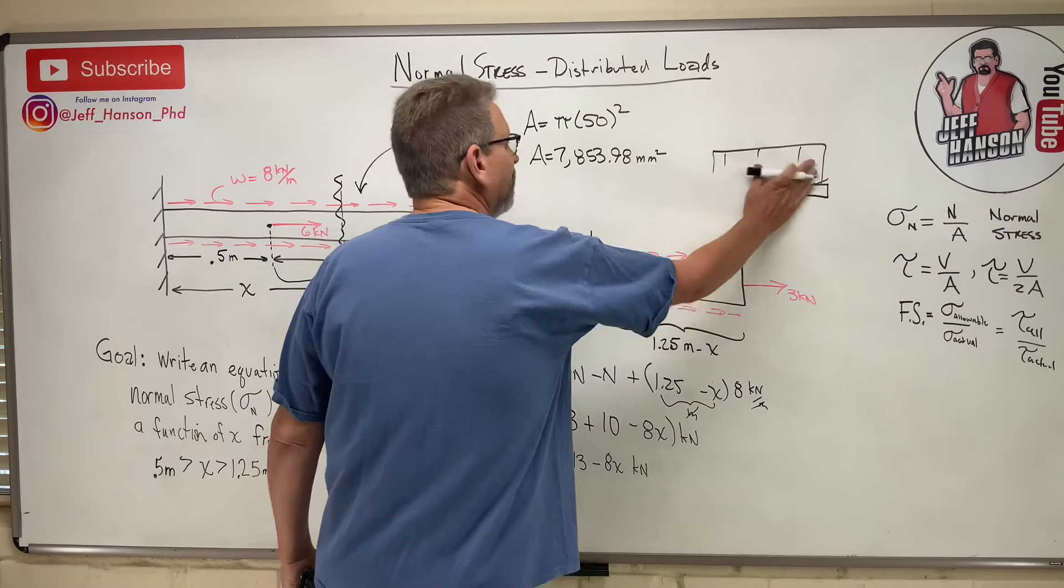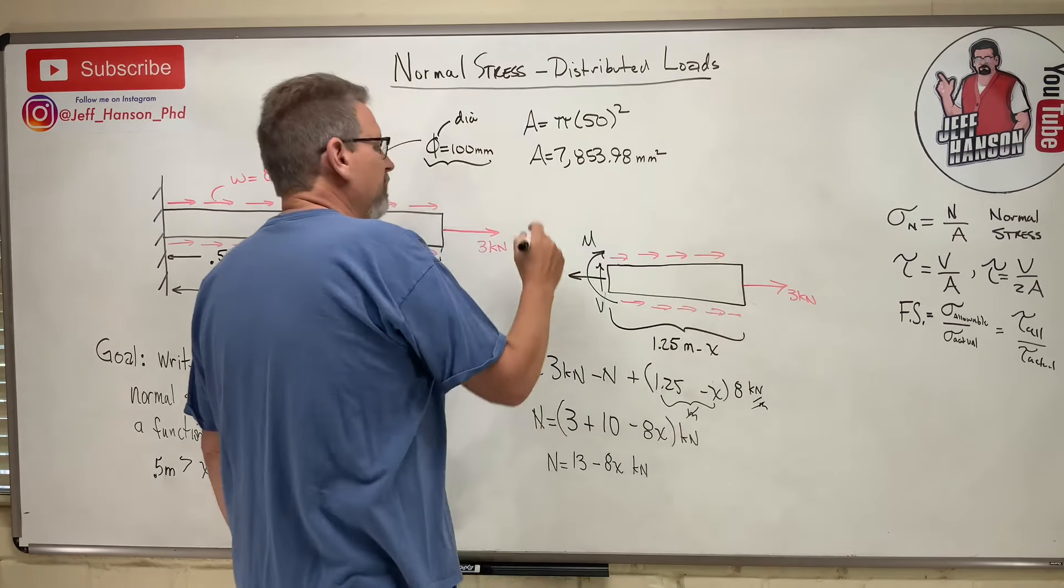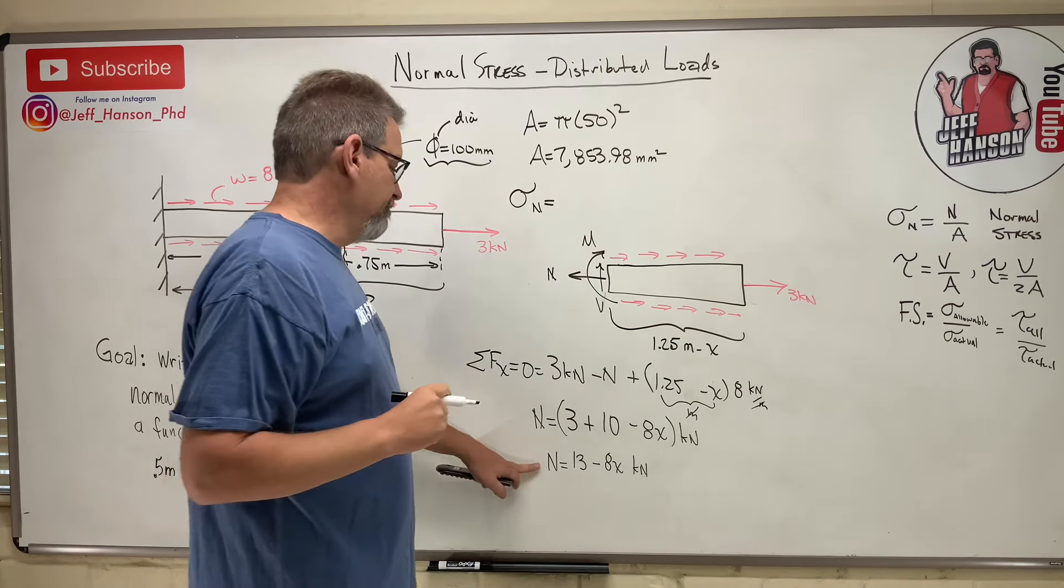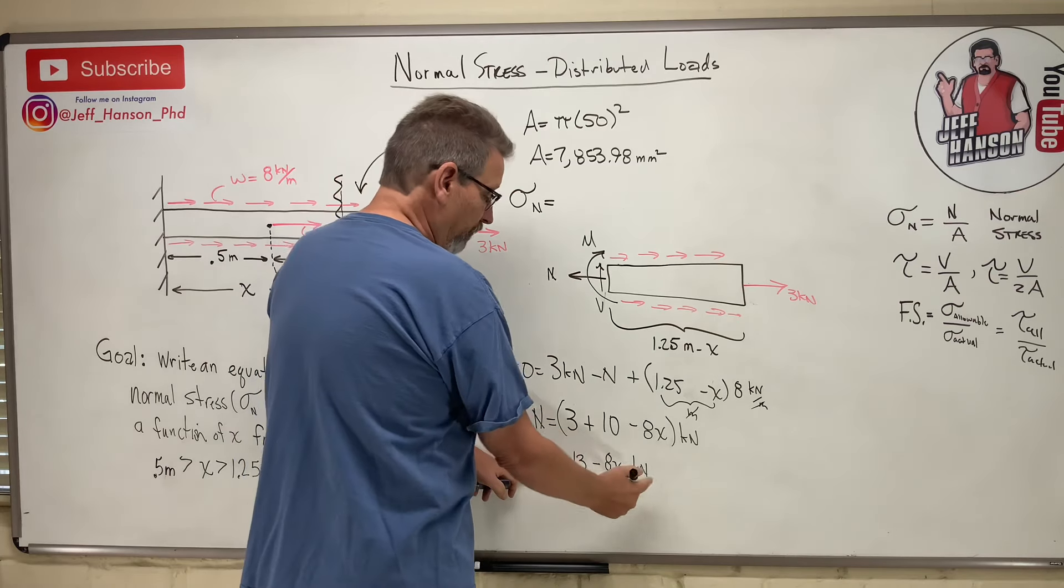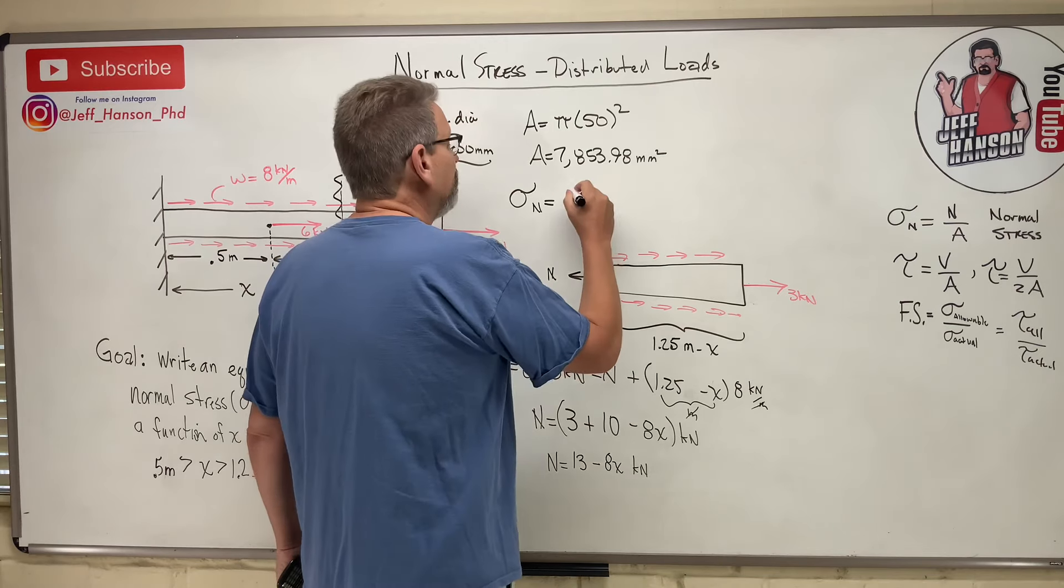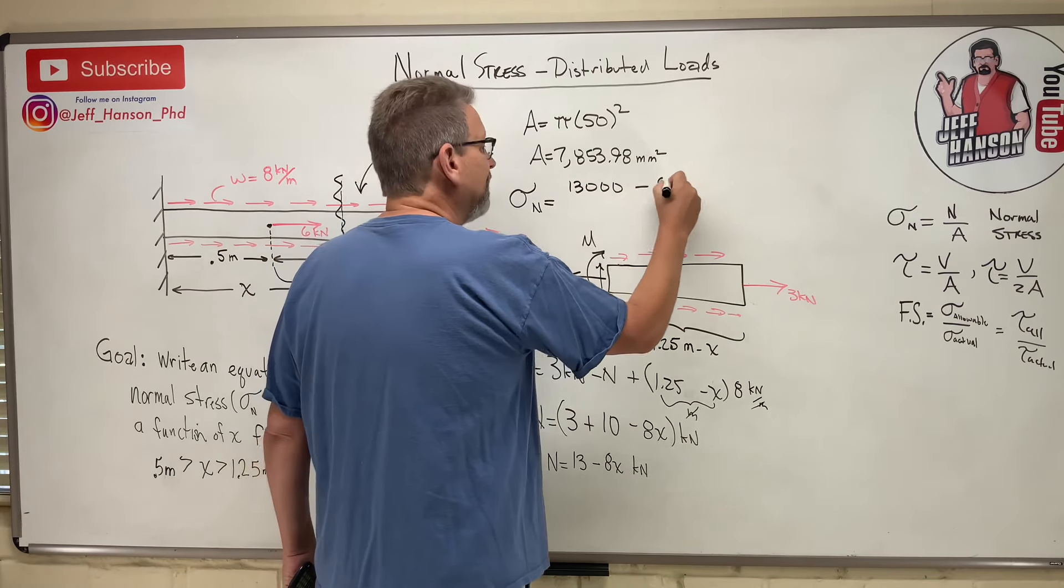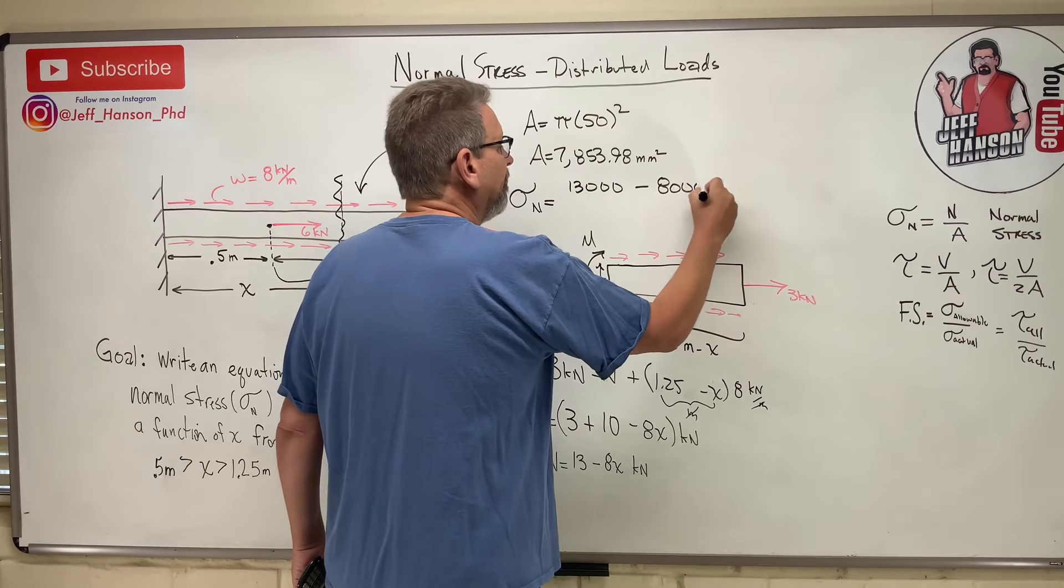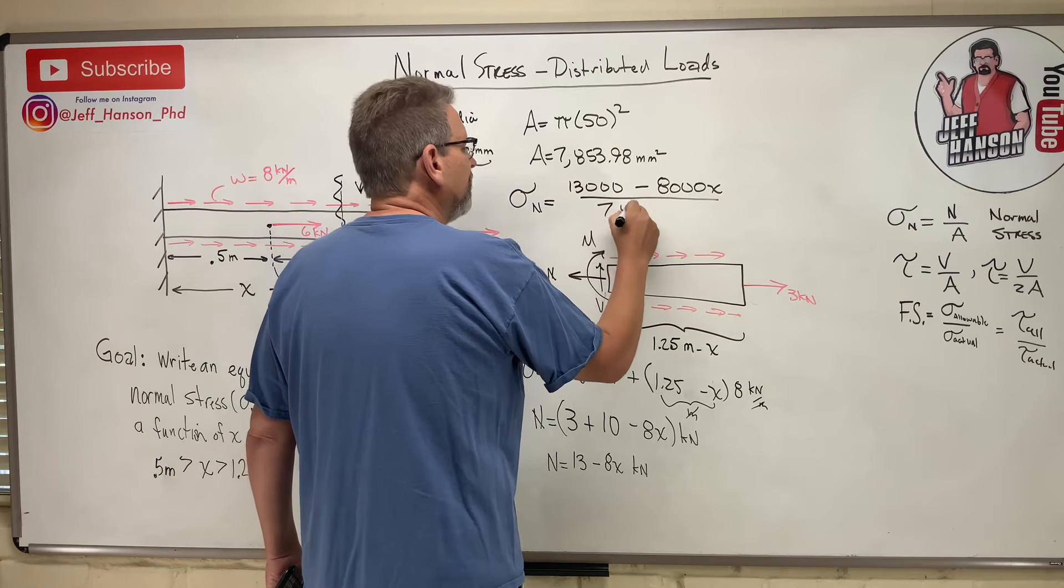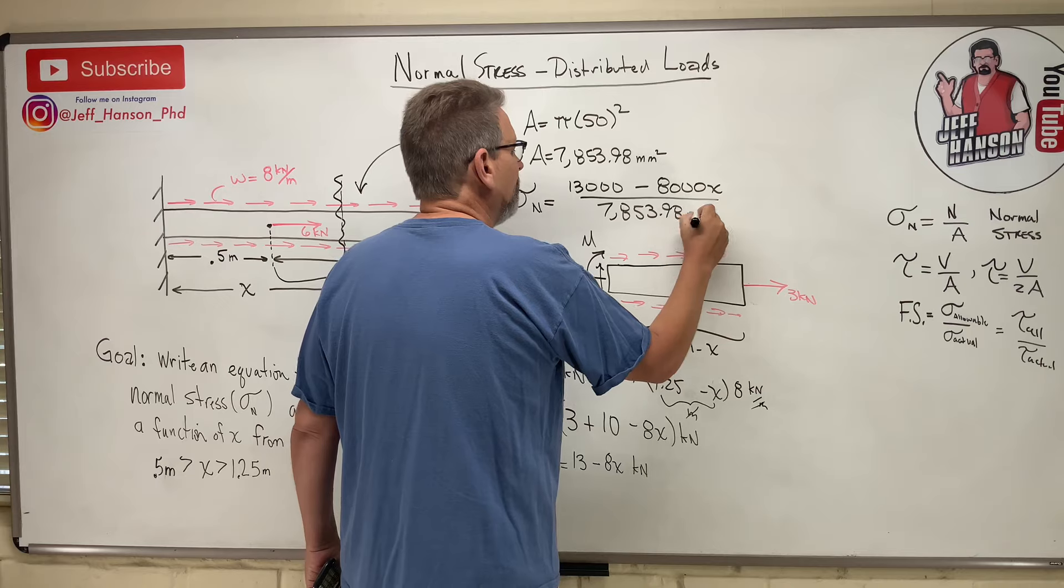Let's see here. Let's get rid of that guy. Get rid of that. Okay, so here we go. Sigma N is equal to N, which I'm going to change from kilonewtons to newtons. So I'm going to multiply that whole thing by 1,000.